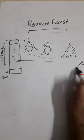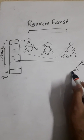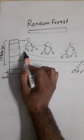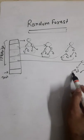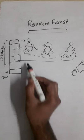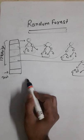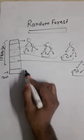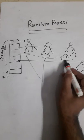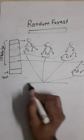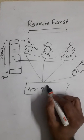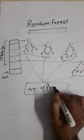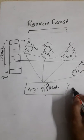After creating a decision tree for each of the datasets, every decision tree gives us some prediction. If it is a regression problem, then we take the average of each of the predictions. This is for regression problems.